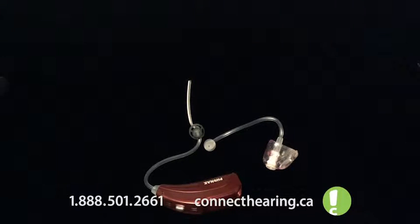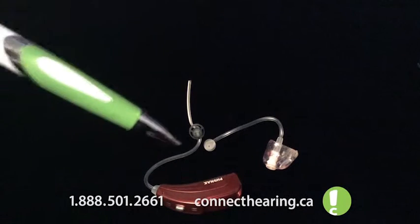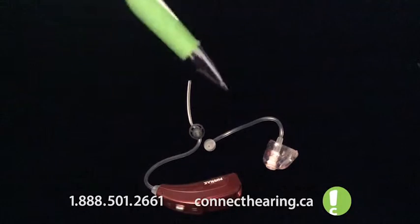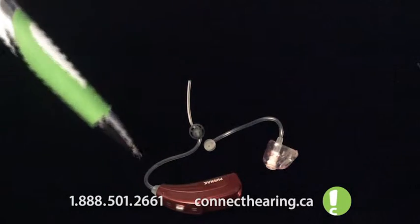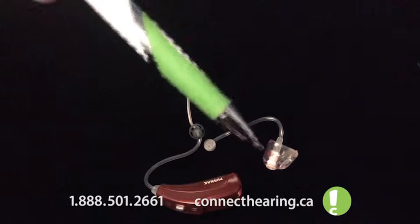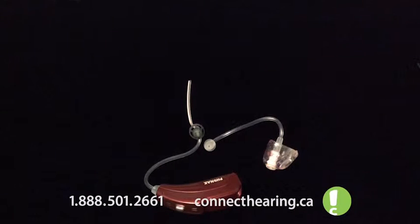So on display here, I have a standard behind the ear hearing aid with the open fit tubing option with a rubber tip and also with a custom slim tip. The use of them is the same. They both have a Cerostop wax guard and I'm just going to show you how to clean them and keep them working.